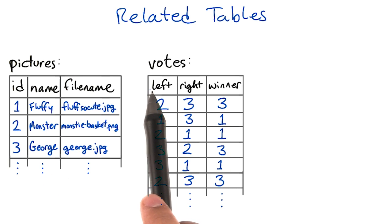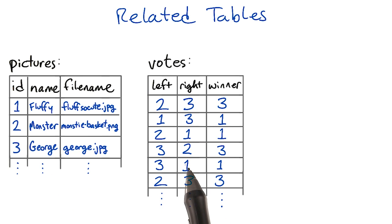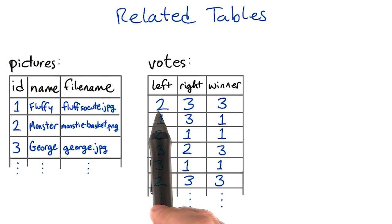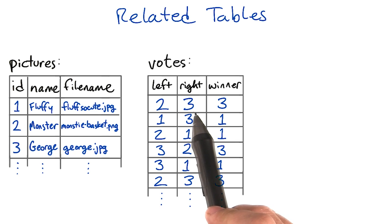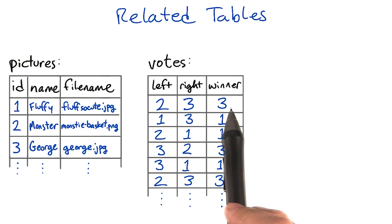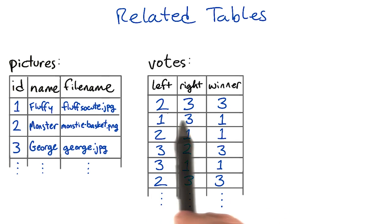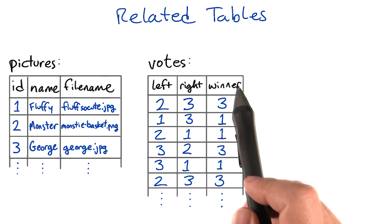The votes table says which images have been displayed together for voting, and which one the user picked as the cutest. Here, the app displayed Monster, ID 2, and George, ID 3, and the user voted for George. Two and three were matched up, and three was the winner.